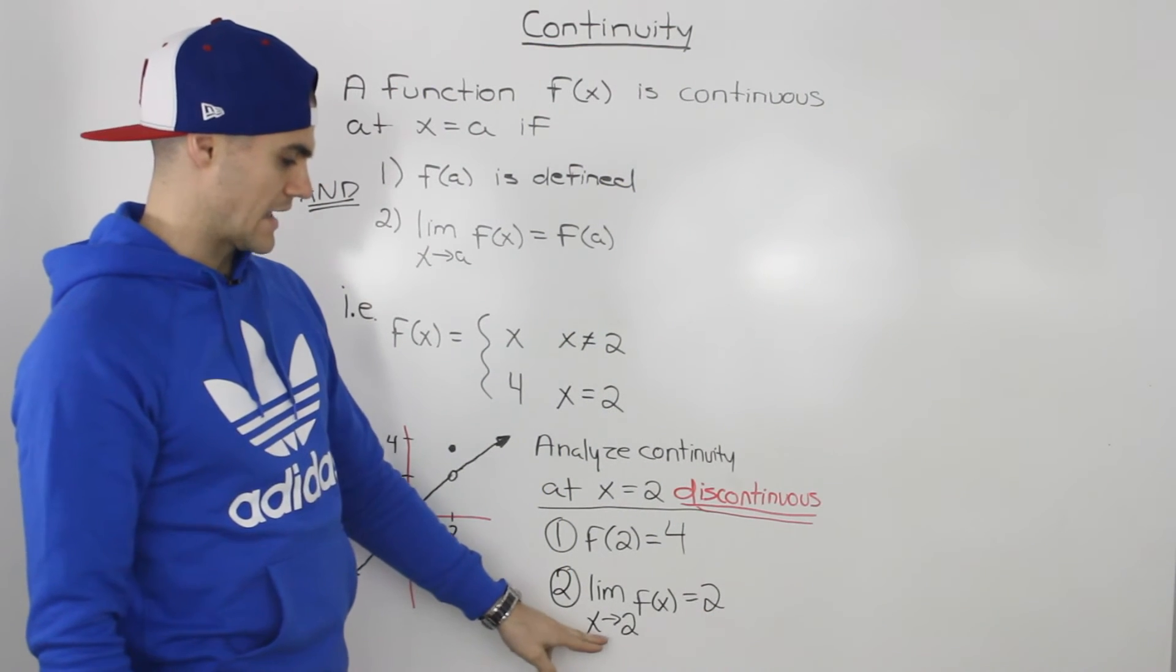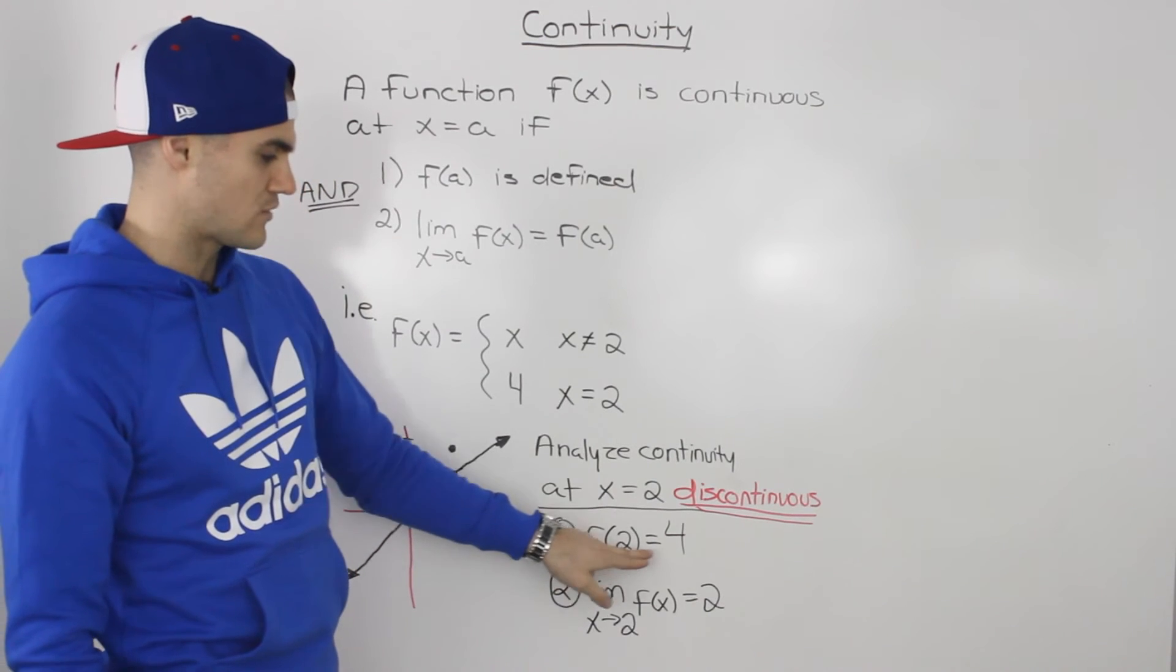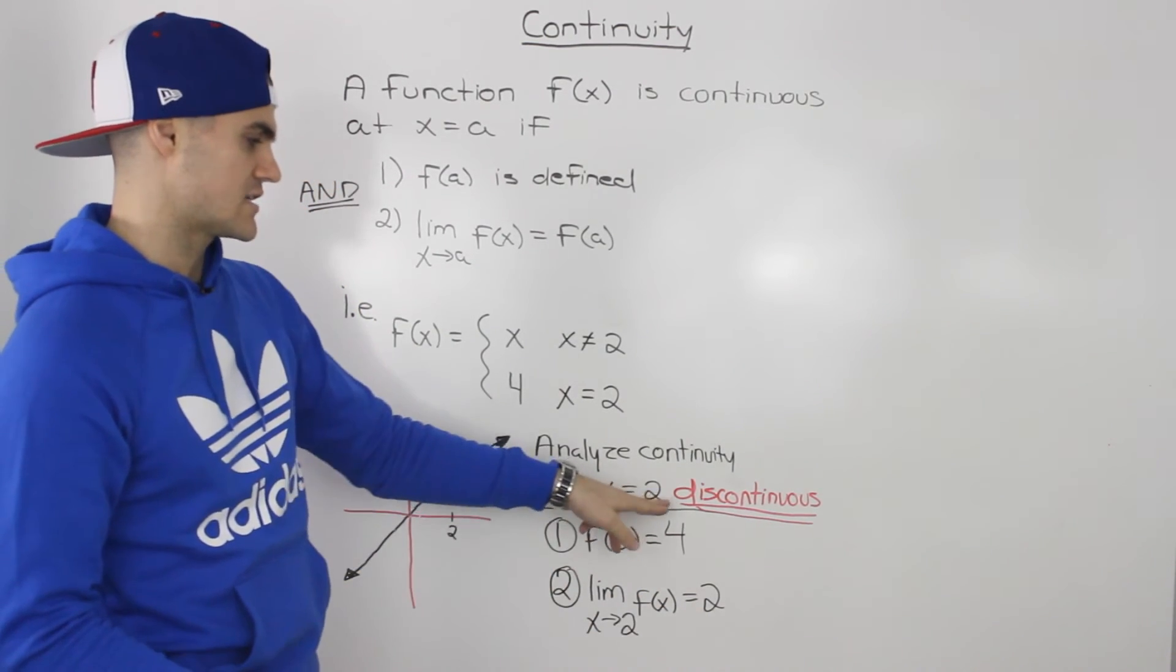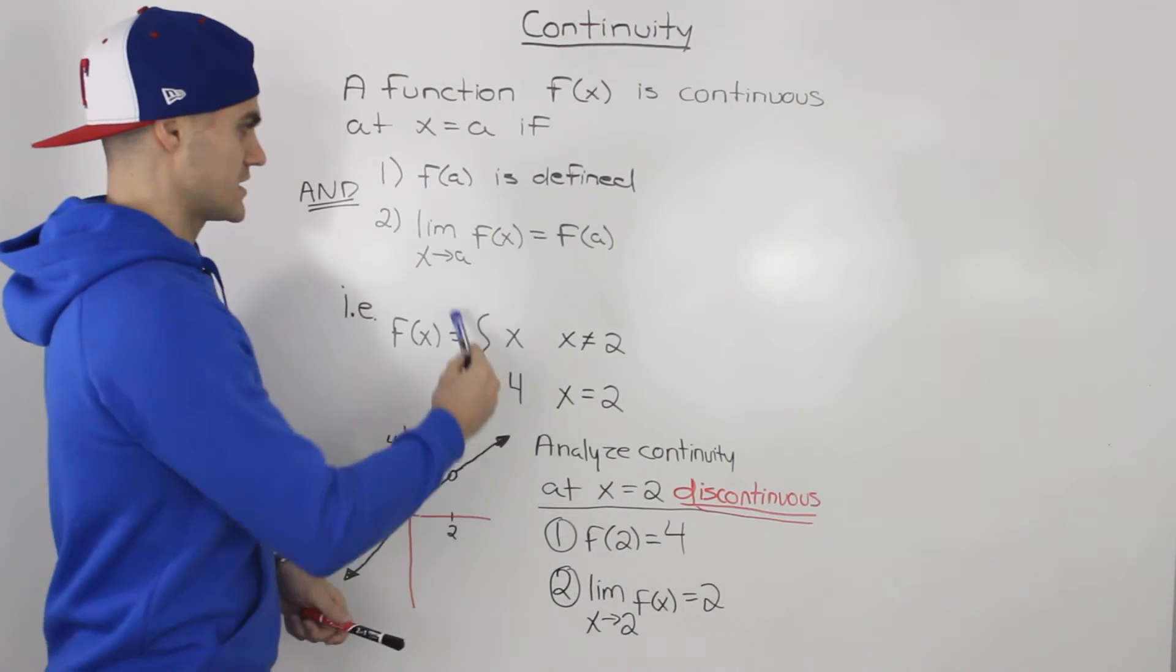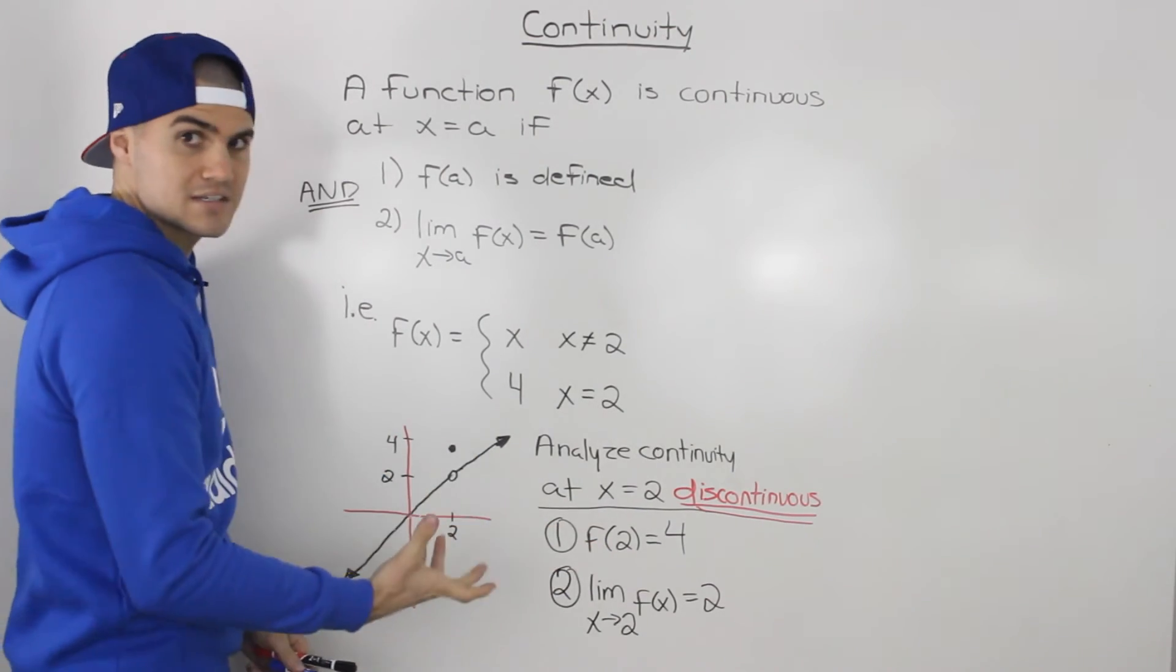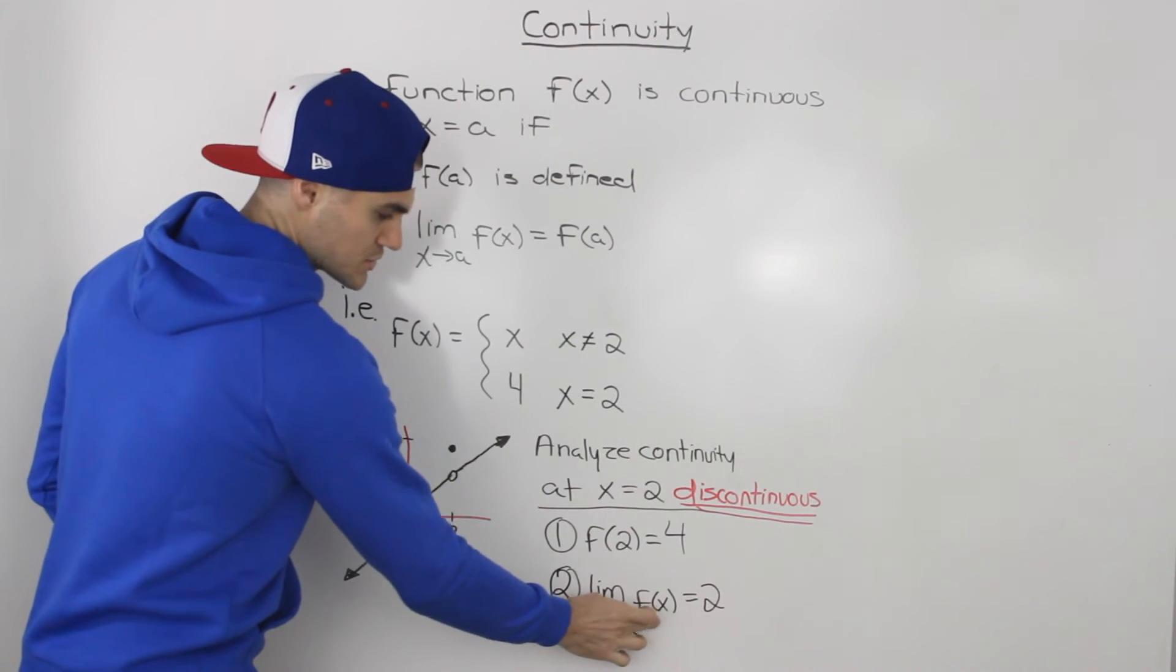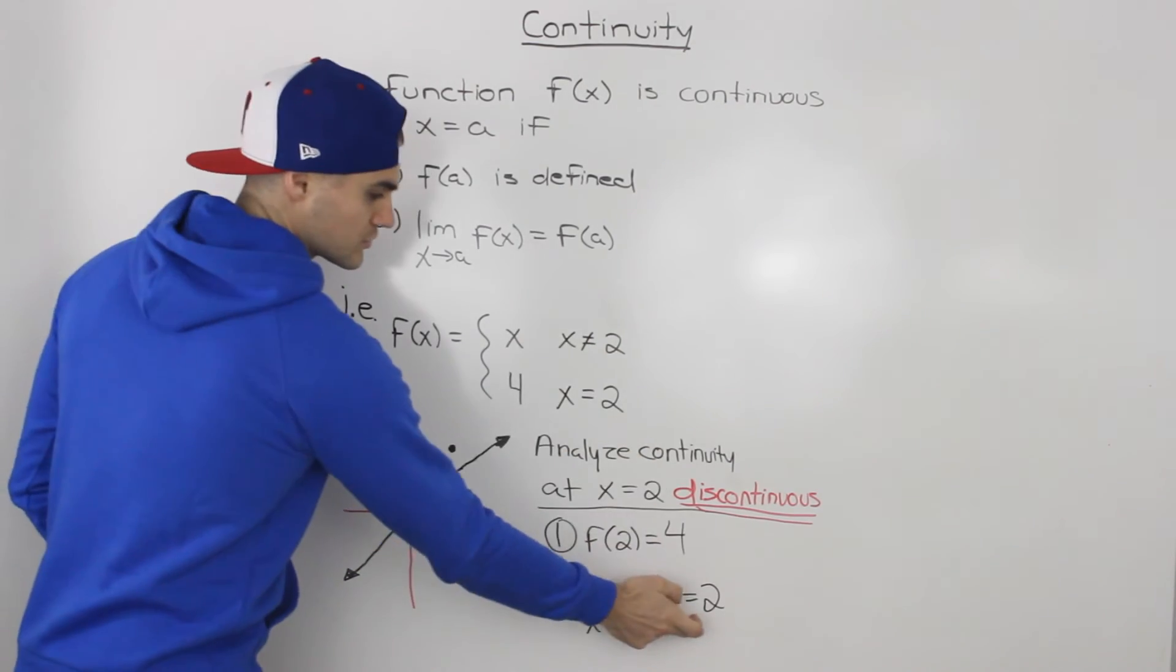And so because the limit as x approaches two of f of x does not equal that f of two value of four, it equals two instead, we say that the function is discontinuous at that x value of two, because the second condition is not satisfied. Even though the first condition is satisfied, f of two is defined, it equals four, the limit as x approaches two of f of x is not equal to four, it's not equal to f of a, it's equal to two. Those two values are different.